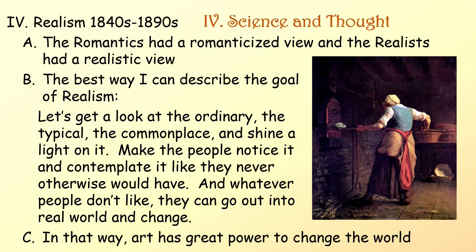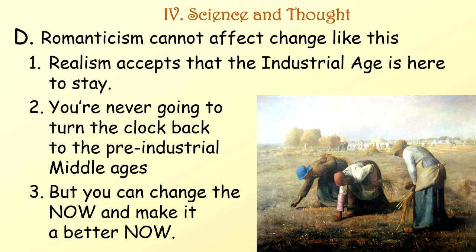Realism in the 1840s to the 1890s. The Romantics had a romanticized view, and the realists had a realistic view. The best way to describe the goal of realism: let's get a look at the ordinary, the typical, the commonplace, and shine a light on it. Make people notice it and contemplate it like they never otherwise would have. And whatever people don't like, they can go out into the real world and change. In that way, art has great power to change the world. Realism accepts that the Industrial Age is here to stay — you're never going to turn the clock back — but you can change the now and make it a better now.